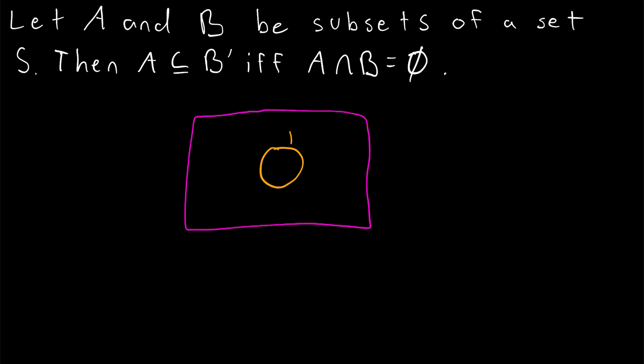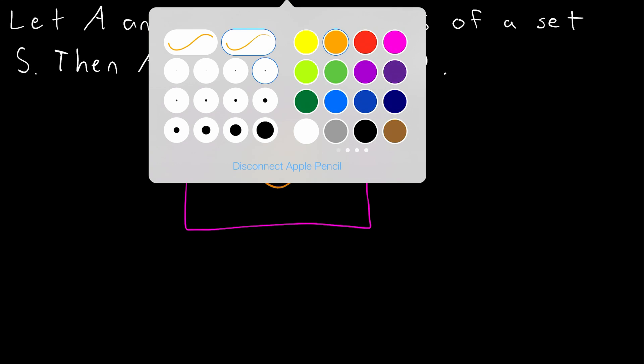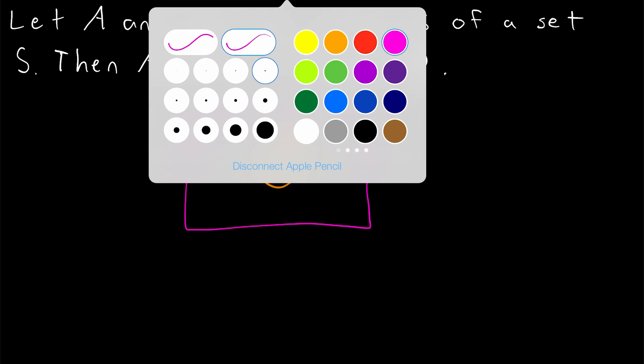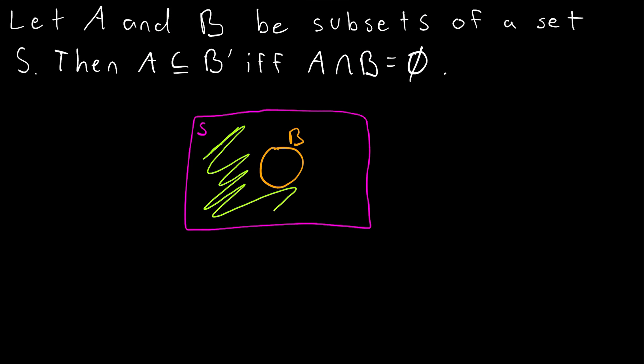and this is our set B, the orange set, everything outside of B but in the purple or pink box, which remember is S, everything outside of B but in the box is the complement of B. So A is a subset of B' if and only if A intersect B is equal to the empty set, which if we wanted to finish our diagram would mean that A is somewhere over here and so the whole thing looks something like this.